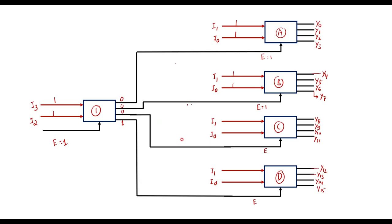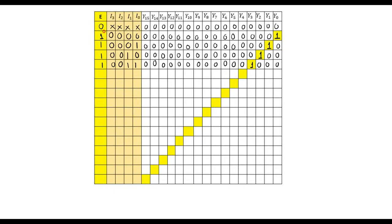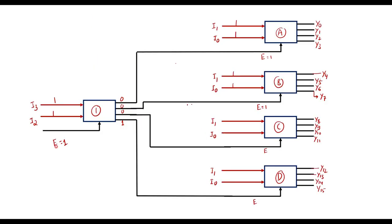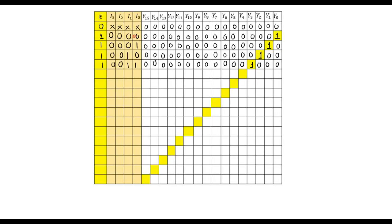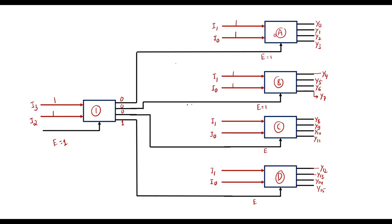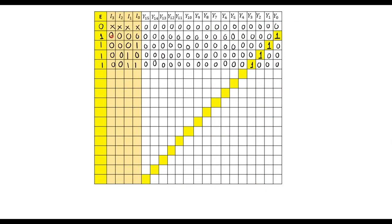Now let me write the truth table according to this explanation. If the enable line is 0, then the output of all decoders is 0. If enable is 1 and I3=0, I2=0, decoder A is selected. Then if I1=0, I0=0, Y0 is high; if I1=0, I0=1, Y1 is high; if I1=1, I0=0, Y2 is high; and if I1=1, I0=1, Y3 is high.